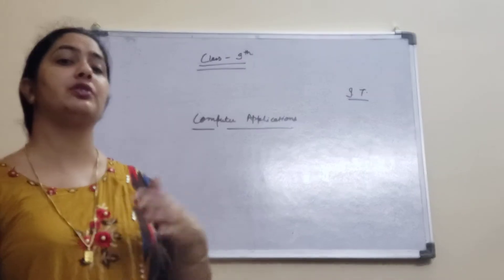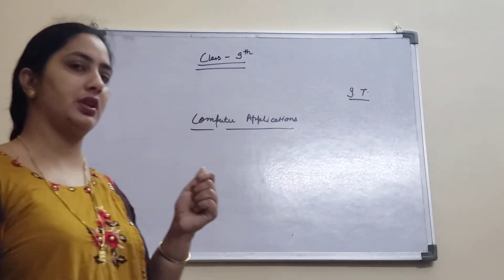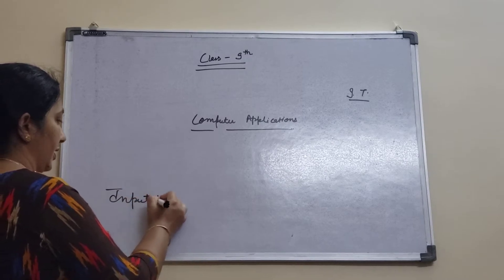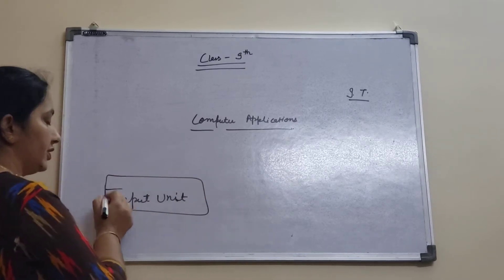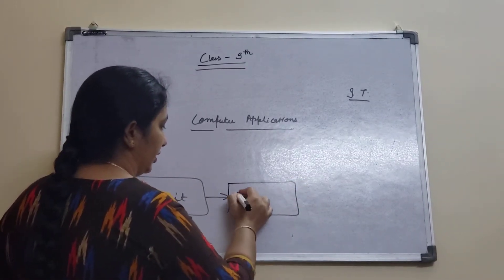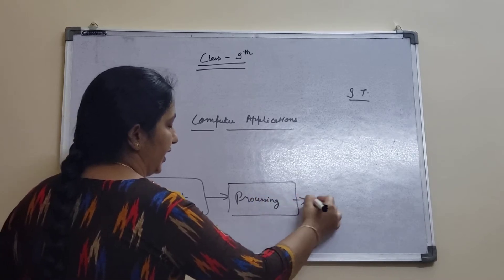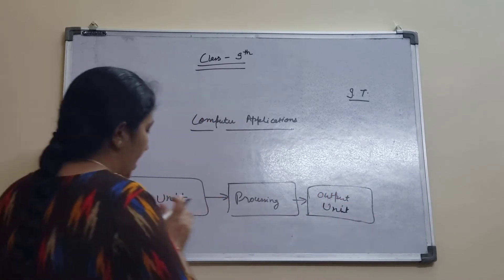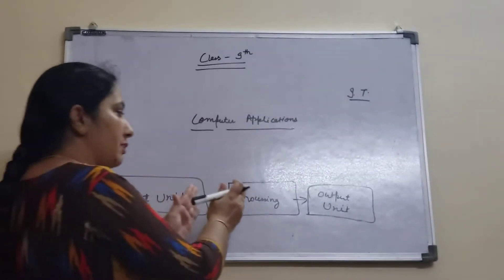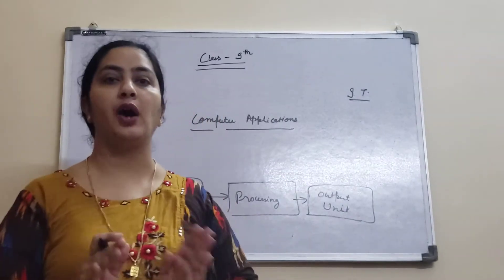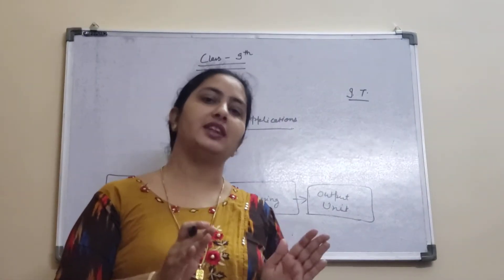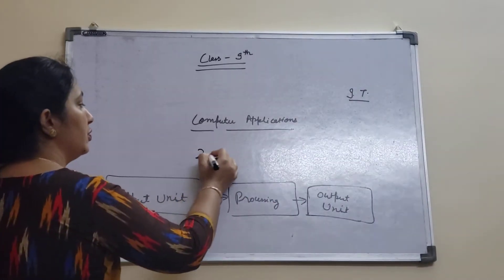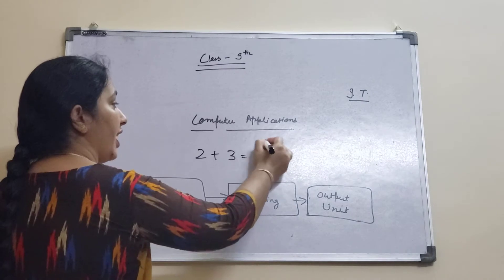Today first I will revise whatever you did in the month of April, that is the simple input, output and processing process. This is your input unit, then processing, and then output unit. As a user you give input to the computer, computer processes it and then you get the desired output. You will get 5 as output when you enter 2 plus 3.